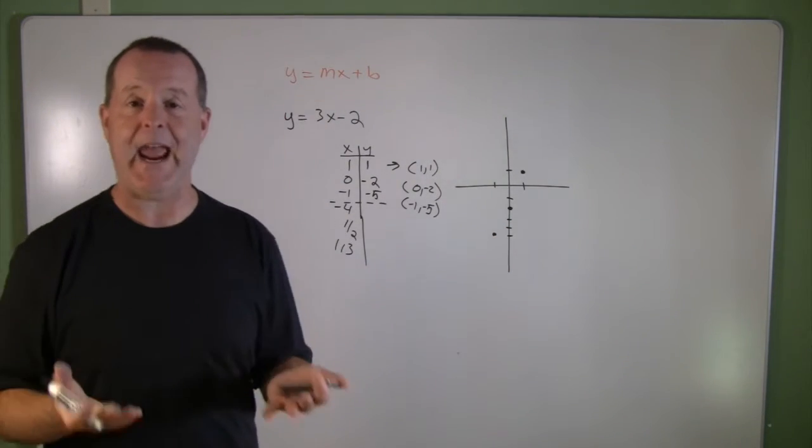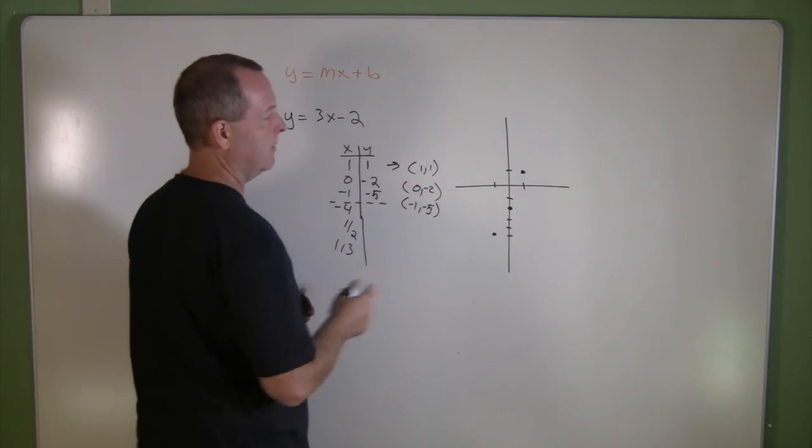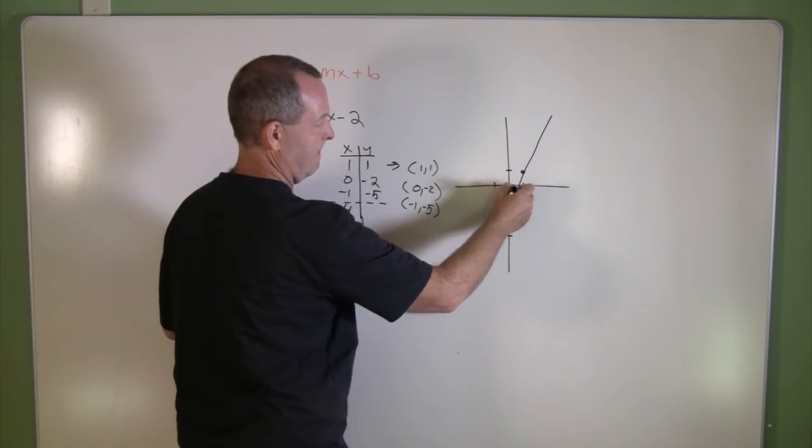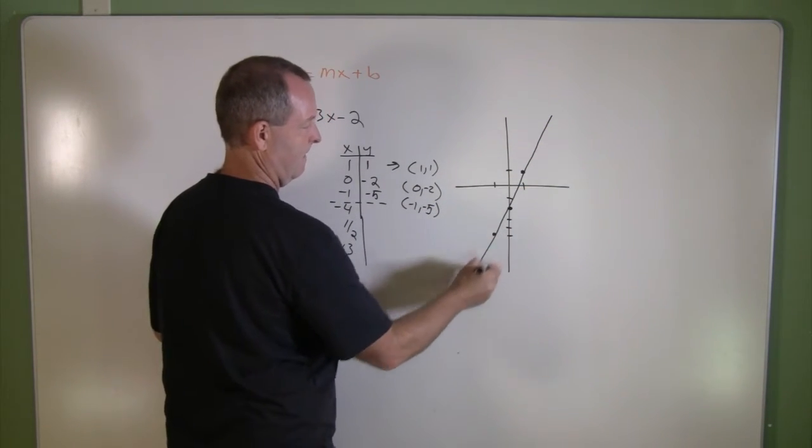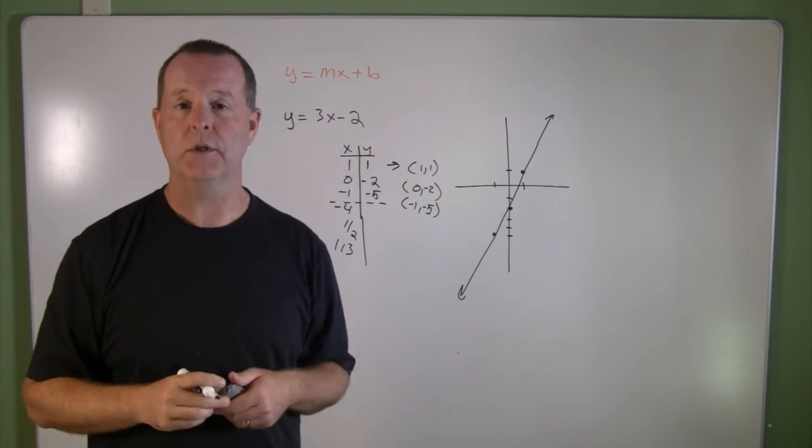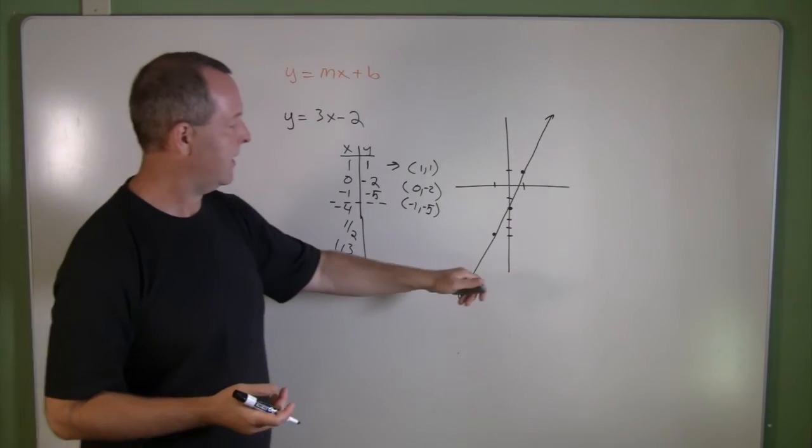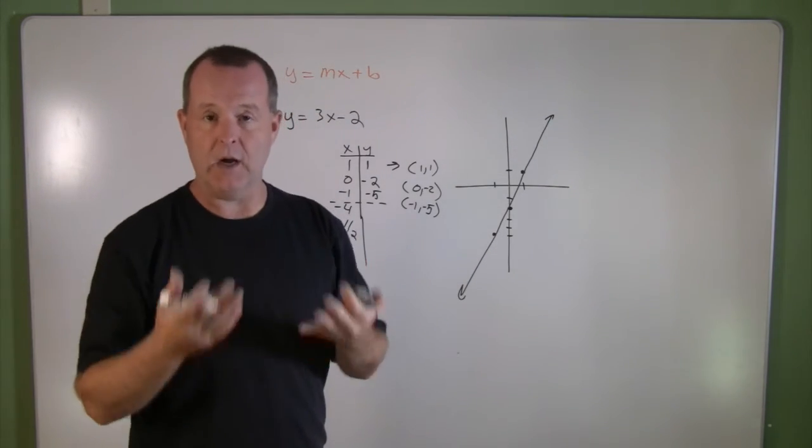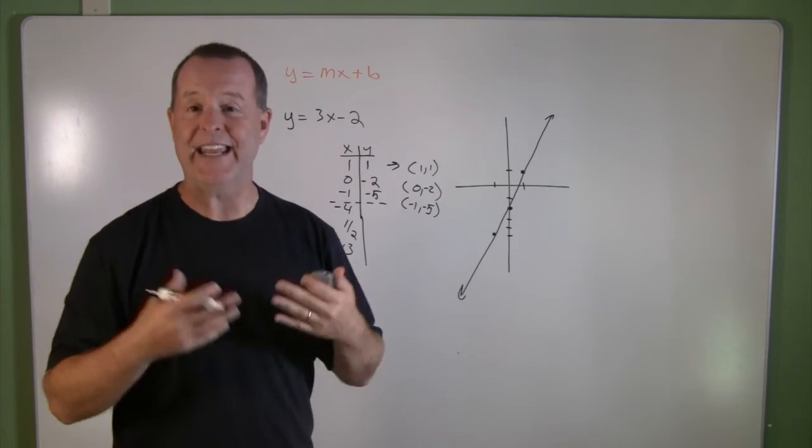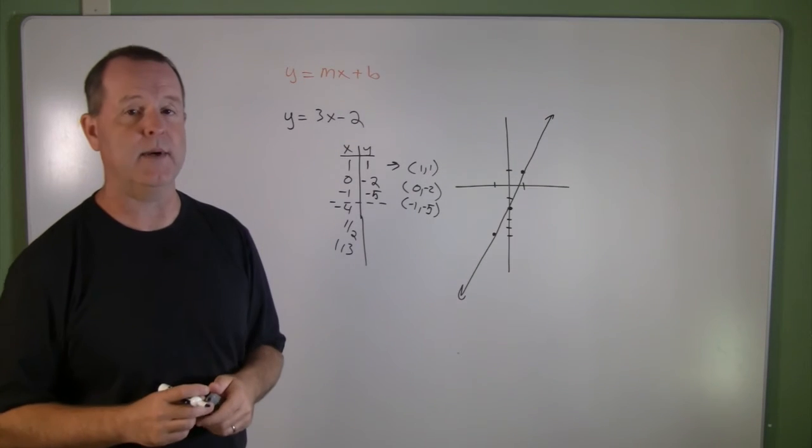And then as accurately as I have drawn this graph, these points line up on a line. And so there I have a graphical solution to the equation y equals 3x minus 2, where this line is made up of an infinite amount of points. And each of those points represents a solution to y equals 3x minus 2.